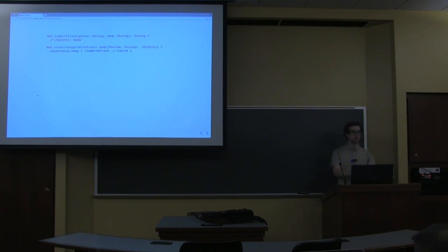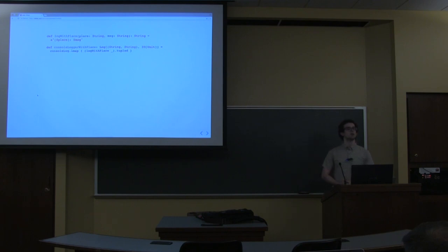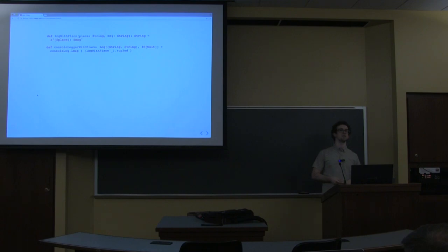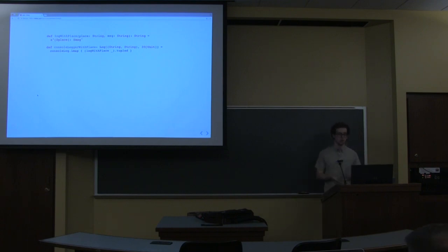The 'tupled' call is just to work around the fact that this is a function with two arguments and we want a function with one argument that takes a tuple. It's just Scala boilerplate—it's part of the standard library. If you give it a function with two parameters, it gives you a function that takes a tuple of those parameters. It's similar to uncurry in that both help you get around the fact that currying is not the default in Scala, and that tuples aren't the same as currying.